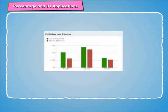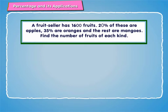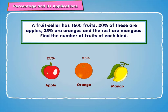Let us revise percent with the help of an example. A fruit seller has 1600 fruits. 20% of these are apples, 35% are oranges, and the rest are mangoes. Find the number of fruits of each kind.